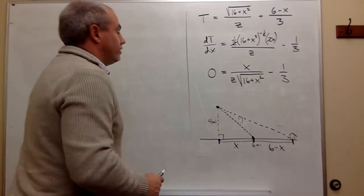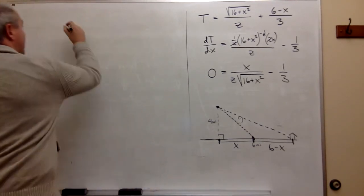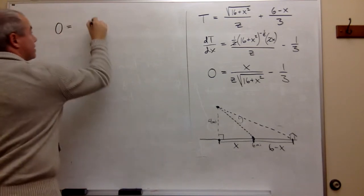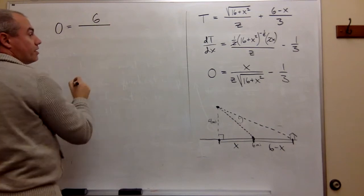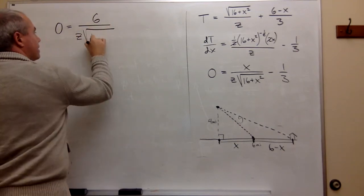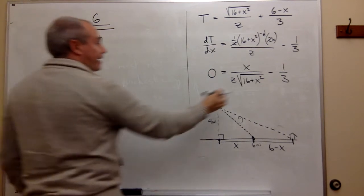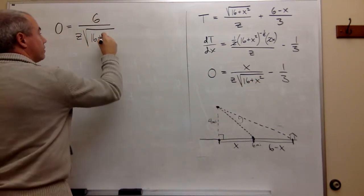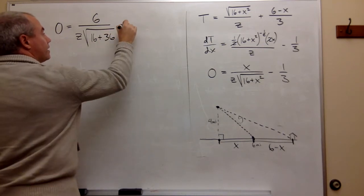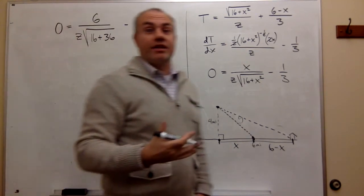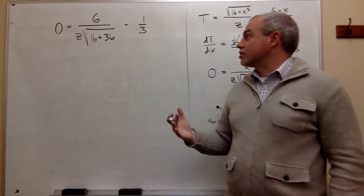So what I'm going to do is say, okay, so now that I know what x is, let's plug it in. And I get that zero is equal to—six is x, so it's 6 over z times the square root of (16 + x²)—but x² in this case is 36—minus one third.